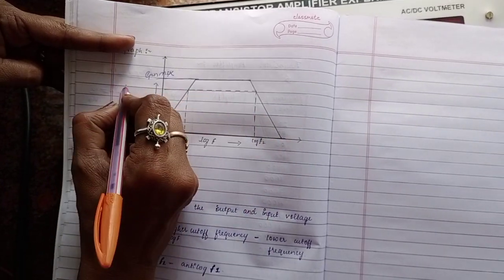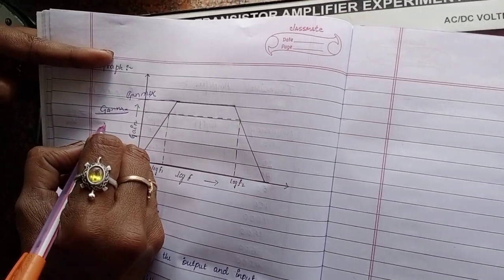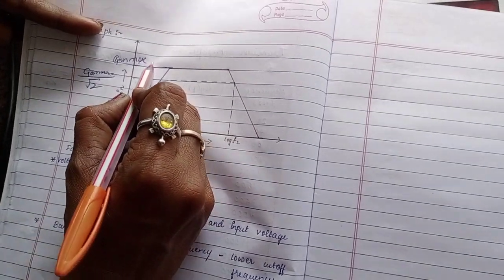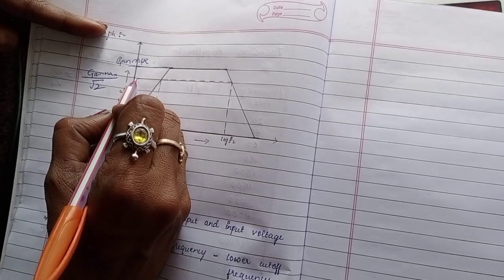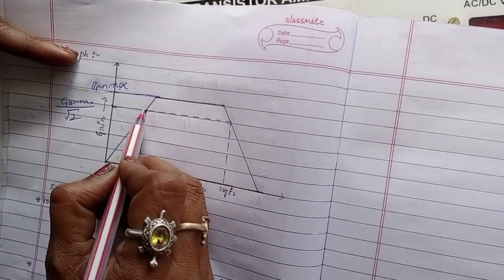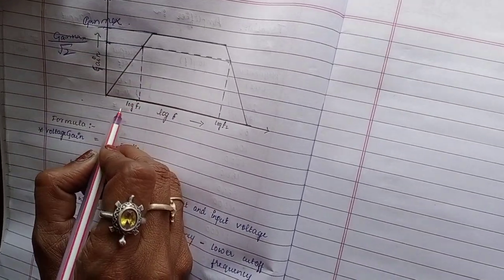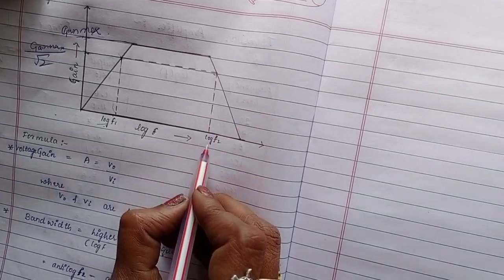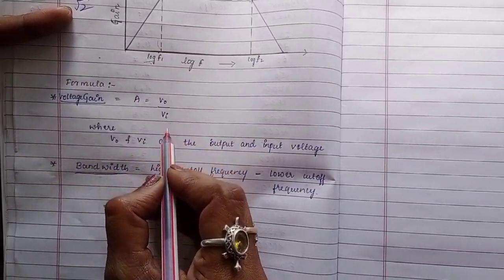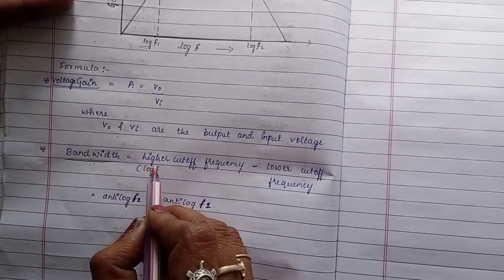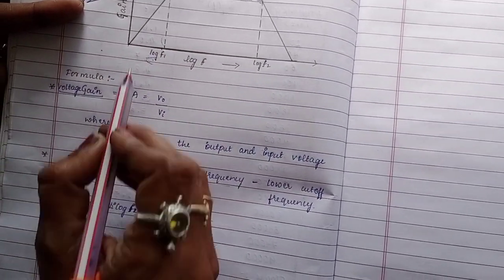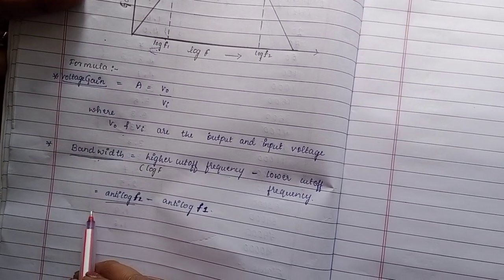This region is gain maximum divided by root 2. Take the value — let us say the maximum is 4 — so 4 divided by root 2. Where that value intersects, find out that point in the frequency region. Let us say the lower region is log F1 and the upper region is log F2. In this experiment, we are finding the bandwidth. Voltage gain equals V0 by VI, where V0 and VI are the output and input voltage. Bandwidth equals higher cutoff frequency minus lower cutoff frequency. If we take frequency as log F, then we should take the anti-log. This gives the bandwidth.